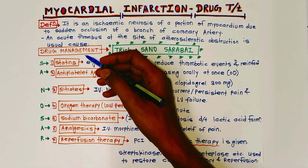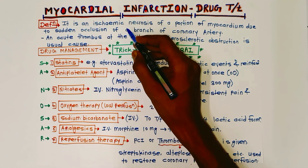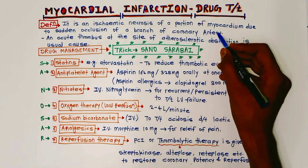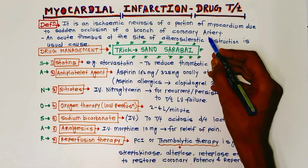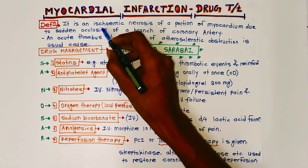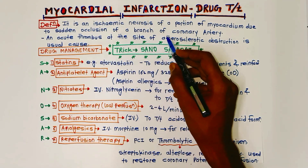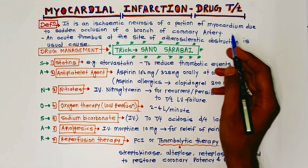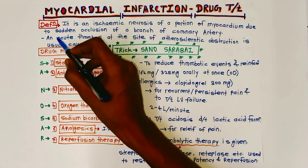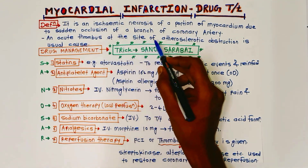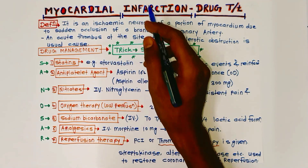First of all, the definition: myocardial infarction is an ischemic necrosis of a portion of myocardium due to sudden occlusion of a branch of a coronary artery. The most common cause for myocardial infarction is an acute thrombus at the site of atherosclerotic obstruction.